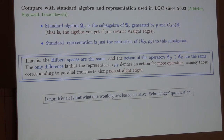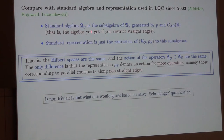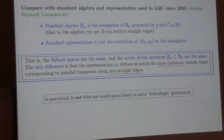Strictly speaking, the algebra used for quantizing LQC at the start was a little bit different because they restricted parallel transports to be only along straight edges, whereas here we've allowed arbitrary analytic edges. So strictly the algebra was slightly smaller, but if we restrict this representation to the algebra with only straight edges, you get the standard one that's always been used. Here we actually get an action of additional operators — for parallel transports with curved edges. It has to be emphasized that this is not a trivial result because it is not what one would have guessed based on a naive Schrödinger quantization.